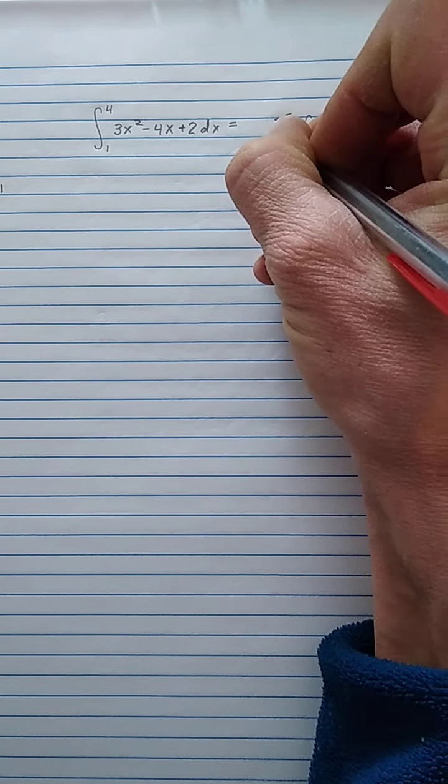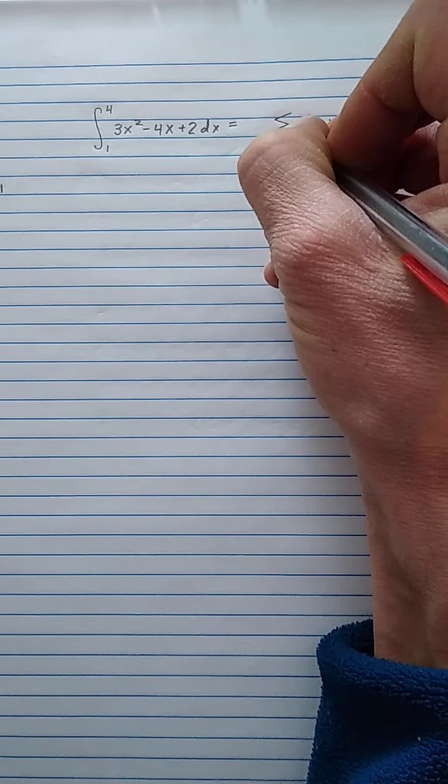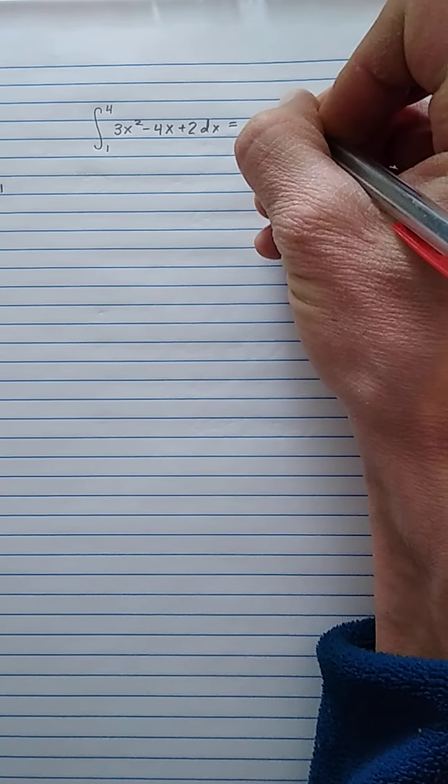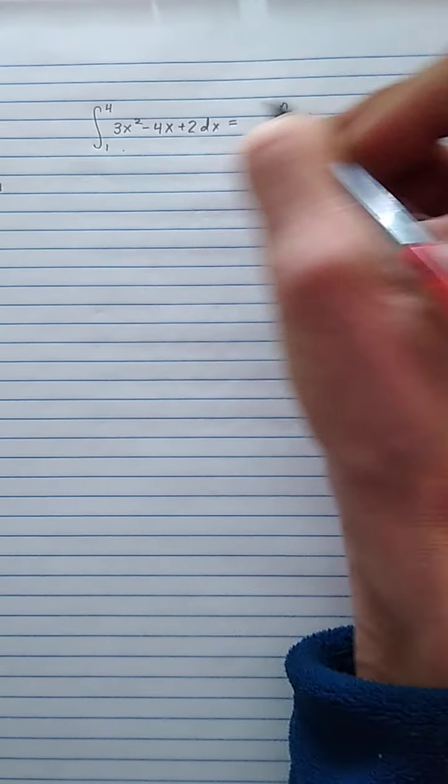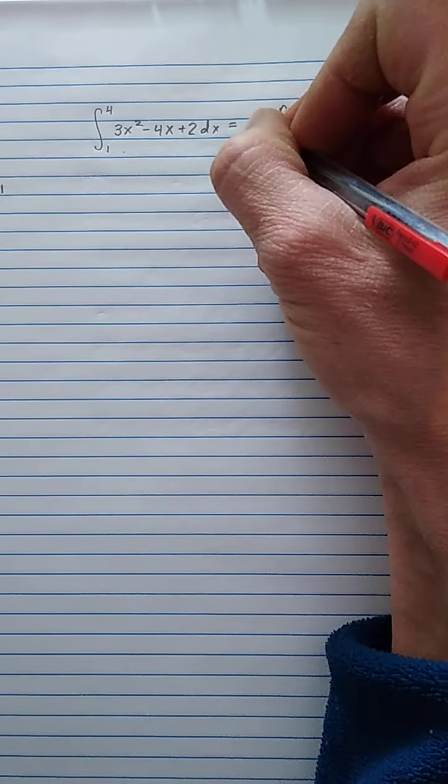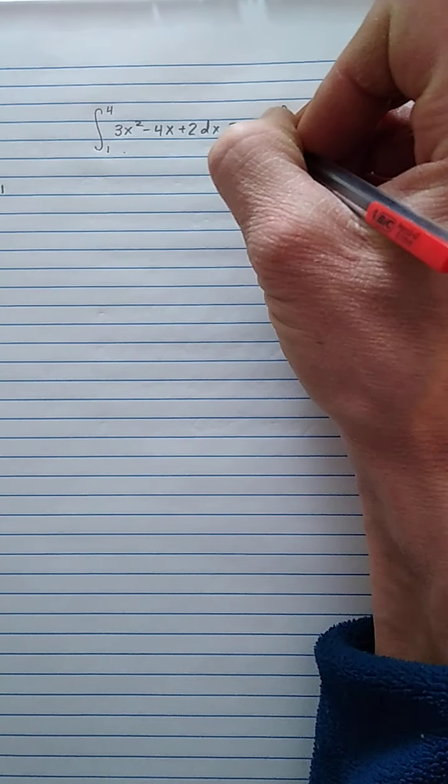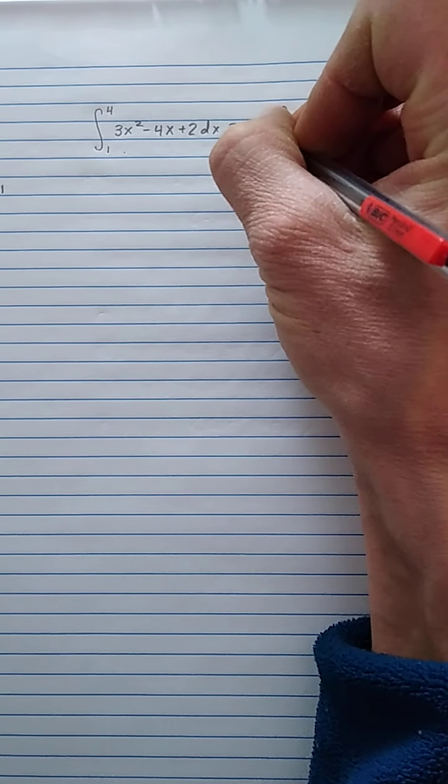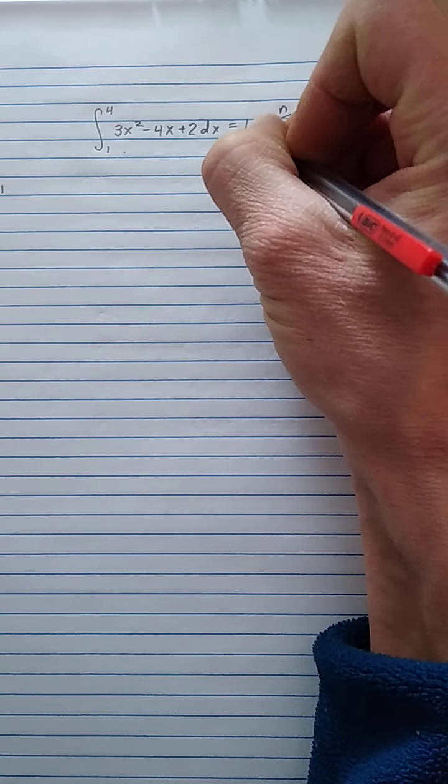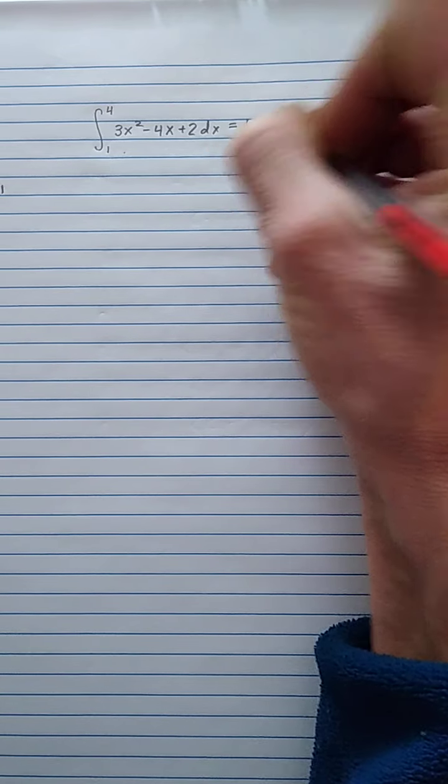And then you have to multiply that by the width of the boxes, which we'll call delta x. So if we count from i equals 1 to n boxes, and then in order for that to be equal to the limit and not, or equal to the integral and not an estimate, we need to take the limit as n goes to infinity.